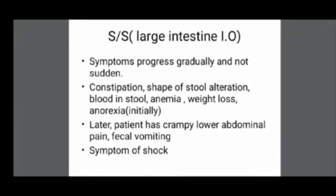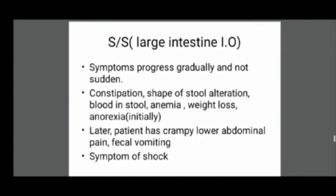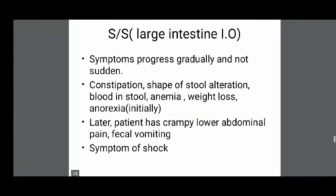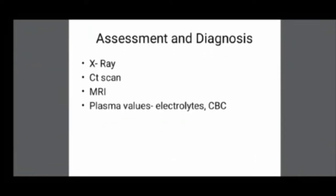In large intestinal obstruction, symptoms progress gradually and not suddenly. Initially there will be constipation, the shape of stool will alter, and there will be blood present. The person has reduced appetite, anemia, and weight loss due to poor appetite. Later, the patient has crampy lower abdominal pain and fecal vomiting will occur.